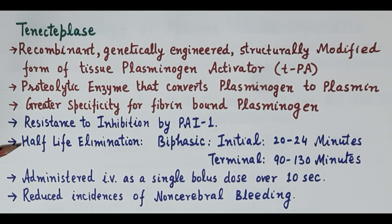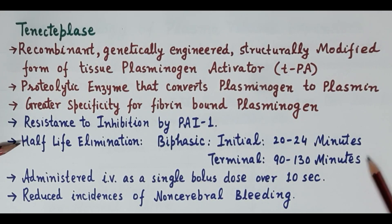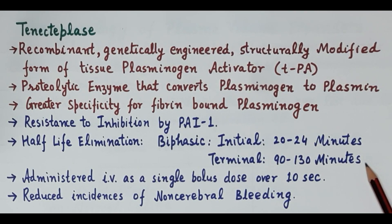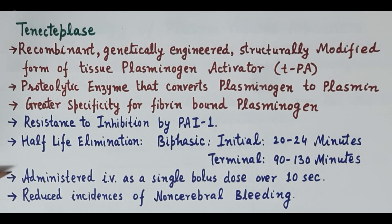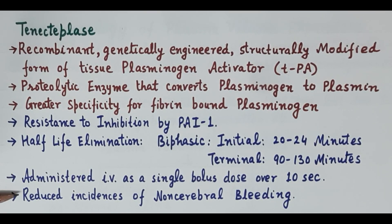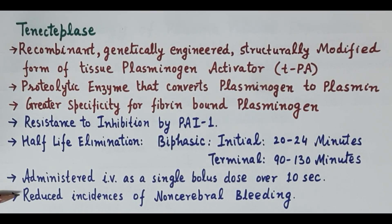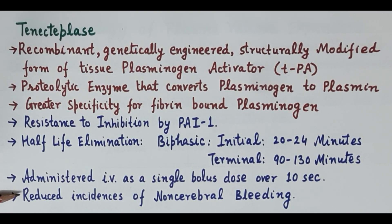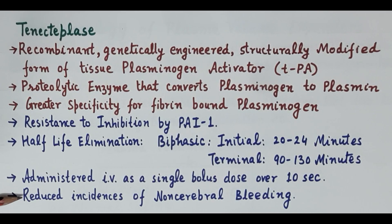Half-life elimination of tenicteplase is biphasic: an initial half-life of 20 to 24 minutes and a terminal half-life of 90 to 130 minutes. It is the only fibrinolytic administered IV as a single bolus dose over 10 seconds. It shows reduced incidences of non-cerebral bleeding due to its greater specificity for fibrin-bound plasminogen.